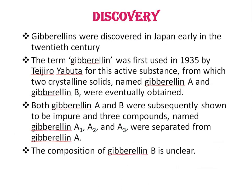Gibberellins were discovered in Japan early in the 20th century as a causative agent for the overgrowth symptoms in rice plants suffering from the bakanae disease. Bakanae means 'silly seedling disease.' The disease was shown to be due to infection with the phytopathogenic fungus Gibberella fujikuroi, now reclassified as Fusarium fujikuroi.